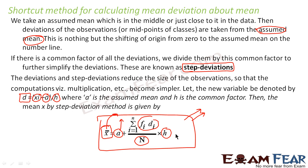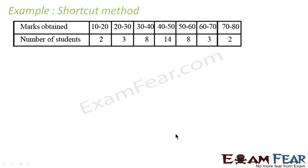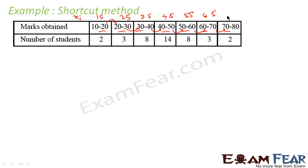Let's take one example. Using the shortcut method, let's find the mean and mean deviation. The data is: 10–20, 20–30, 30–40, 40–50, 50–60, 60–70, 70–80 — it is all continuous, so this is a continuous frequency distribution. The first step is to find xi (midpoints): 15, 25, 35, 45, 55, 65, 75.